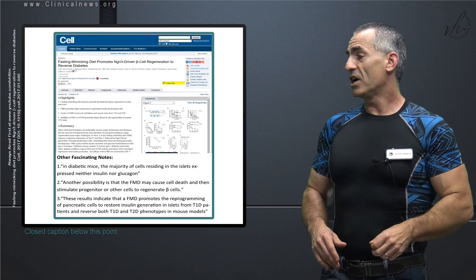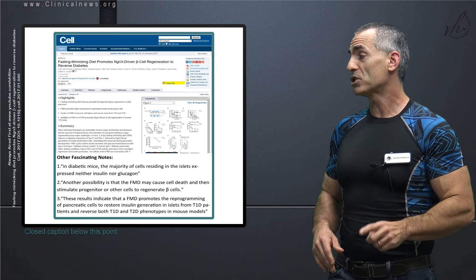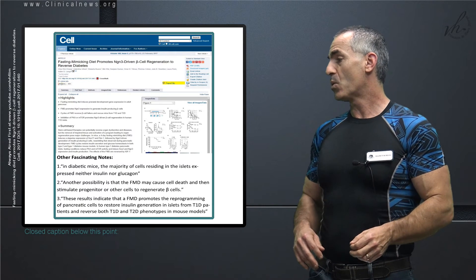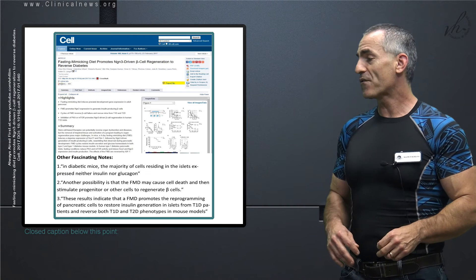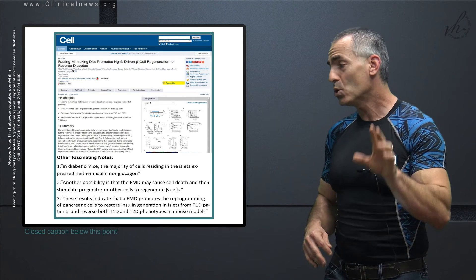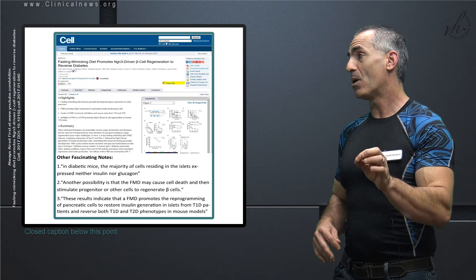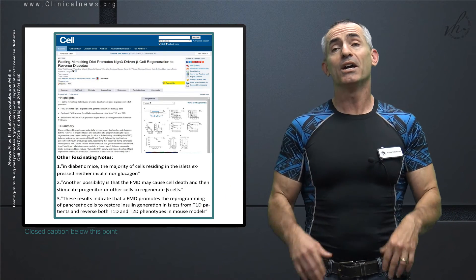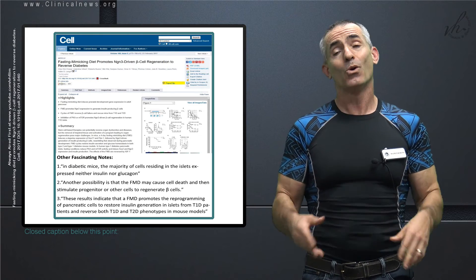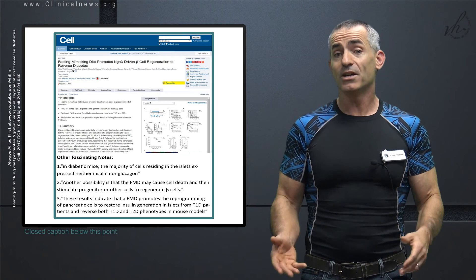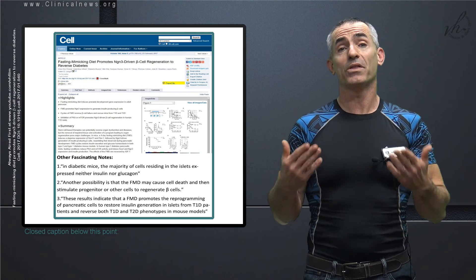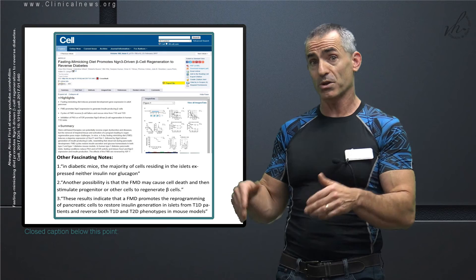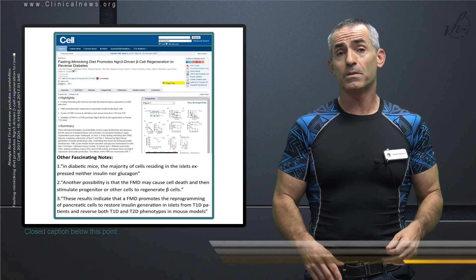To conclude, the results indicate that a fasting mimicking diet promotes the reprogramming of pancreatic cells to restore insulin generation in islets from type 1 diabetic patients and reverse both type 1 diabetes and type 2 diabetes phenotypes in mouse models. Not a drug, not surgery, not a stem cell replacement, literally just basically fasting or fasting mimicking diet. For whatever reason, it caused the body to reproduce the proper cells where they need to be. If you have any references to certain diets that you've noticed on the fasting mimicking diet that are out there, feel more than free to post it down below in the video.